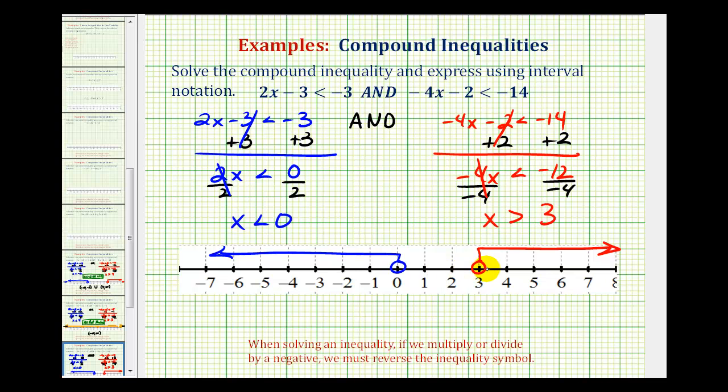This means there are no values that satisfy both of these inequalities at the same time. Because this is an AND, this is telling us there is no solution to this compound inequality. We can't include this graph as our solution, we must clear it. So there's no solution to this compound inequality.